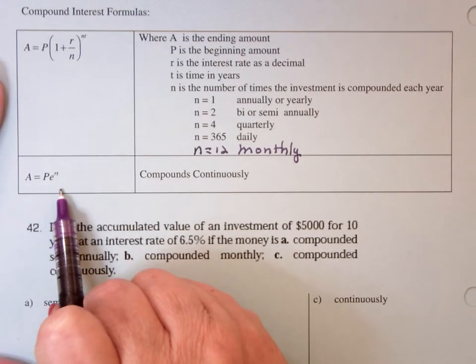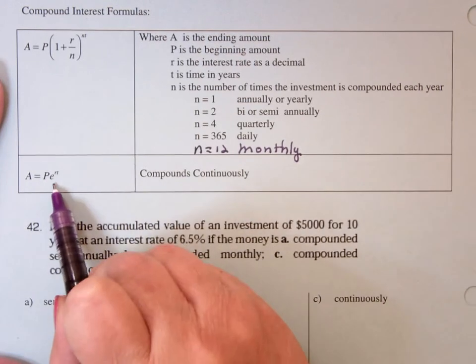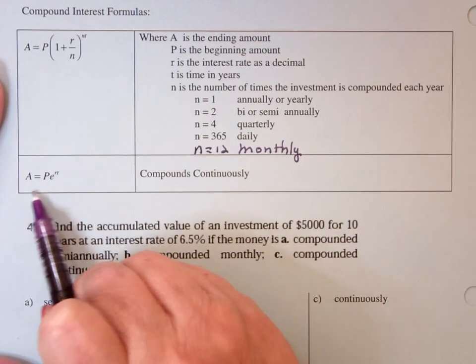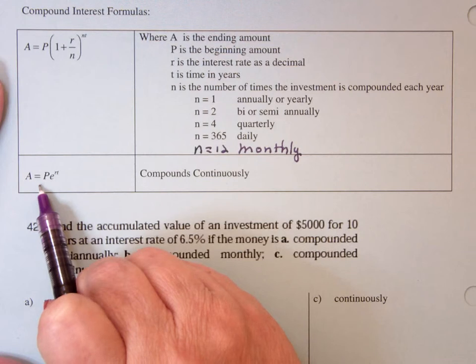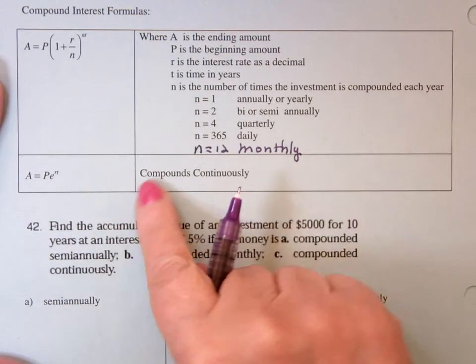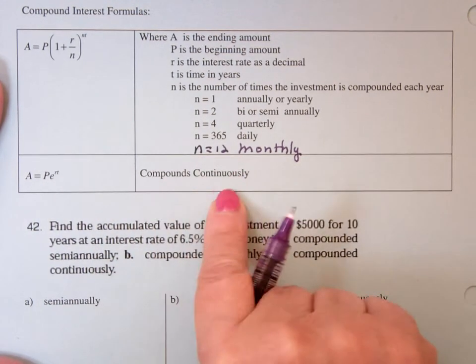Now N here is when it's compounded continuously, it's the E thing, that one, that A equals P E to the RT. And that says it's compounded continuously.